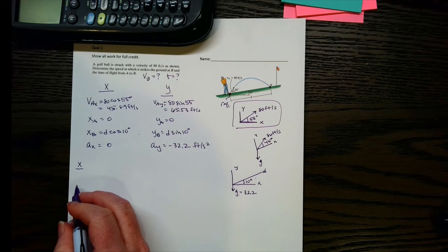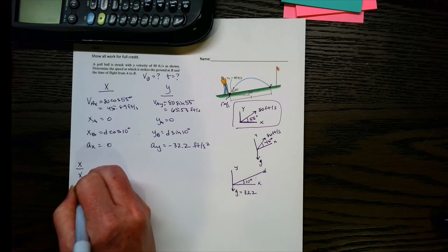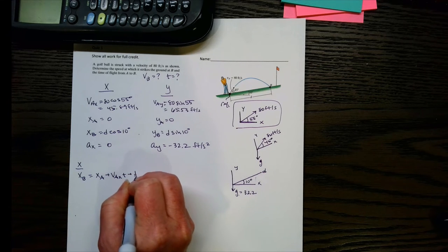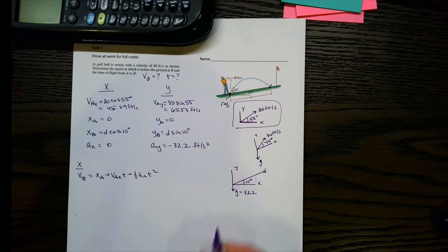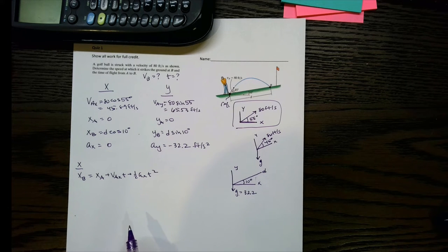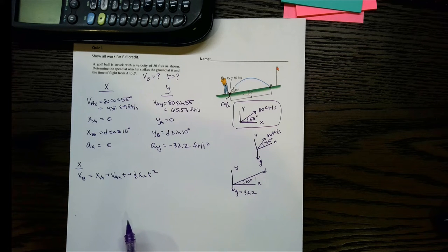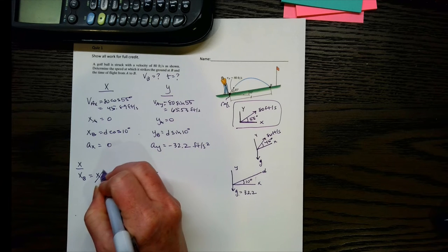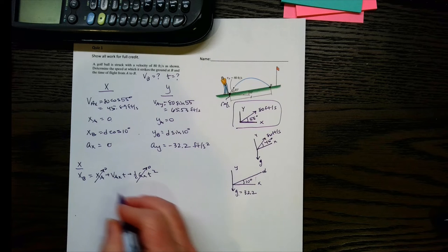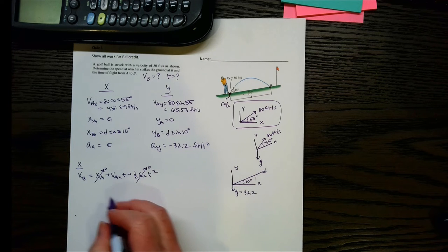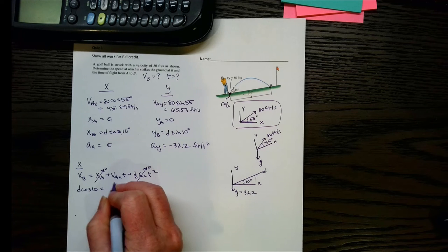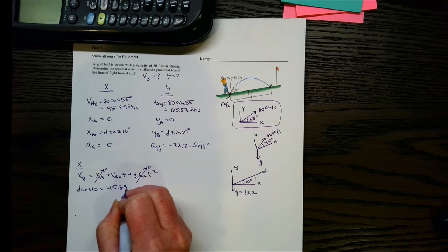So in the x direction, the only equation that really makes sense is going to be xb equals xa plus vaxt plus one half axt squared, because the other two equations just basically tell you vax is equal to vbx, so it doesn't give you much. So this is going to be 0 here. xa is 0. So we know that from there. And let's plug in our information. xb is d cosine 10.